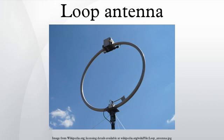Loop antennas are relatively easy to build. A small loop antenna, also known as a magnetic loop, generally has a circumference of less than one-tenth of a wavelength, in which case there will be a relatively constant current distribution along the conductor. As the frequency or the size is increased, a standing wave starts to develop in the current, and the antenna starts to acquire some of the characteristics of a resonant loop. These intermediate cases cannot be analyzed using the concepts developed for the small and resonant loop antennas.